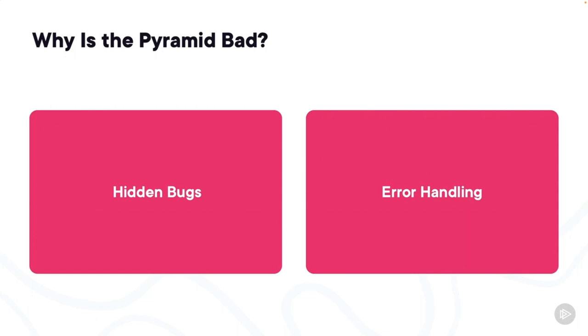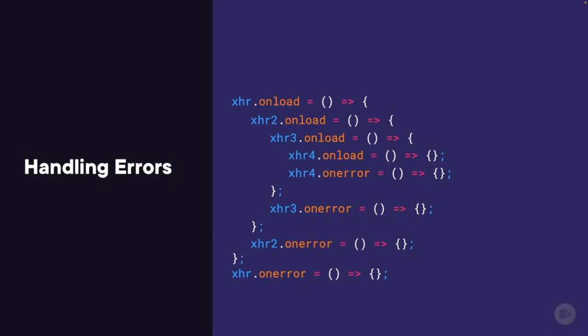Another problem with pyramiding code is error handling. If xhr3 returned a 500 error from the server, xhr4 wouldn't be called and the onerror function of xhr3 would be called — but it's all inside of an onload of xhr2. If you handle the onerror case, that can make your code even messier, because now you have a lot more code in your onload functions, and you're handling errors inside of success functions. So how can we write code that executes in the correct order without massive nesting? We'll learn how next.